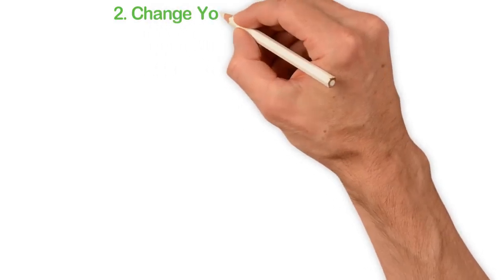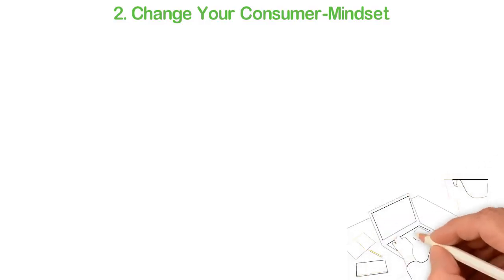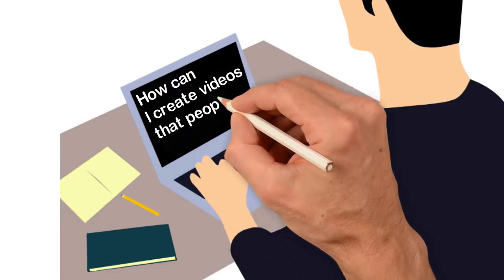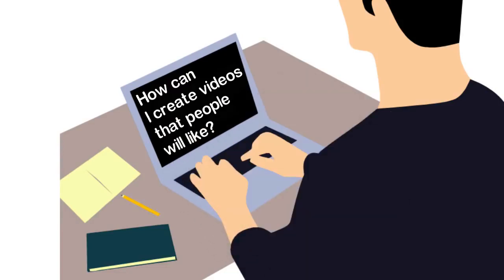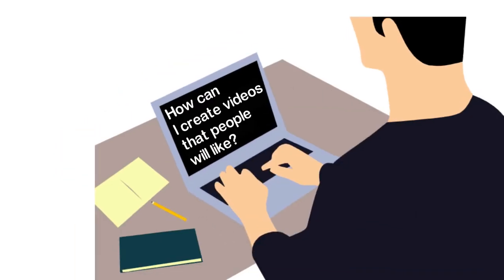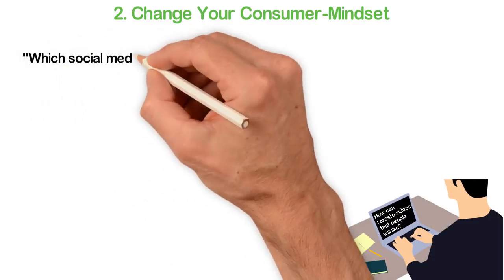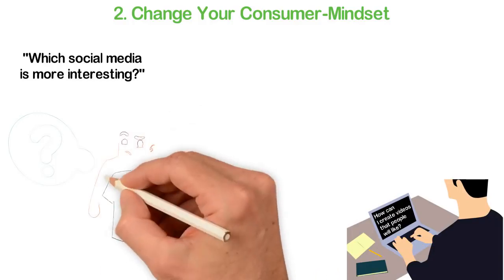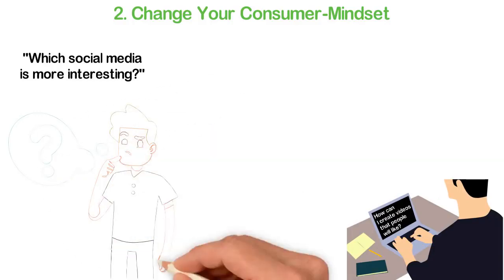2. Change your consumer mindset. When I got to know about Facebook, my first concern was, can I sell through it? When I got to know about how popular YouTube is, my first question was, how can I create videos that people would like? Consumers don't think that way. Instead, they think, which social media is more interesting? Theirs is to consume, so they are not thinking of how to serve people and make money from them.